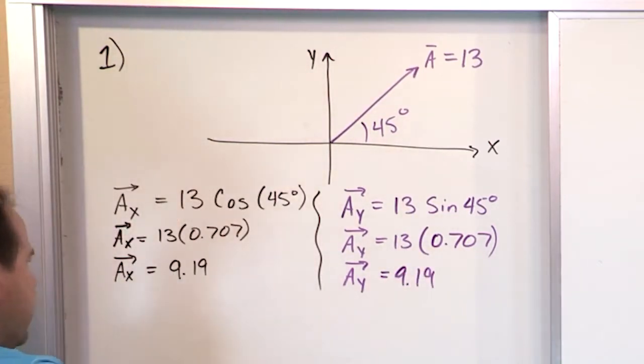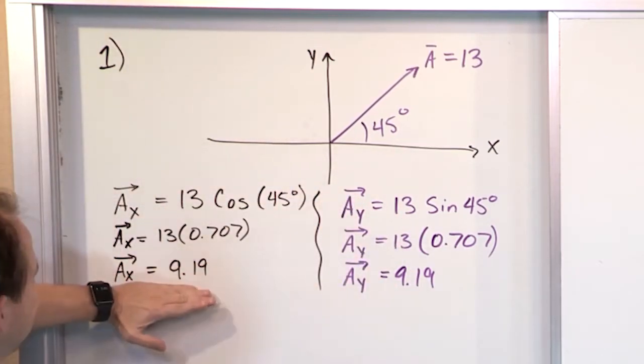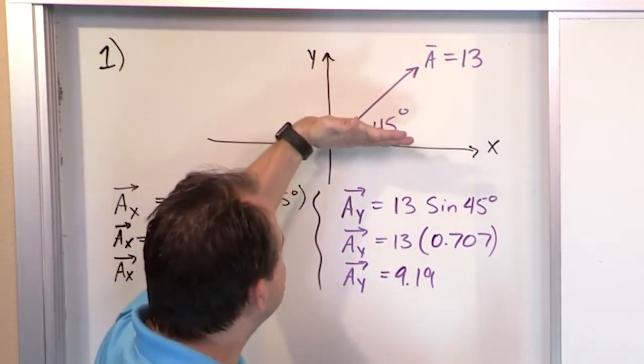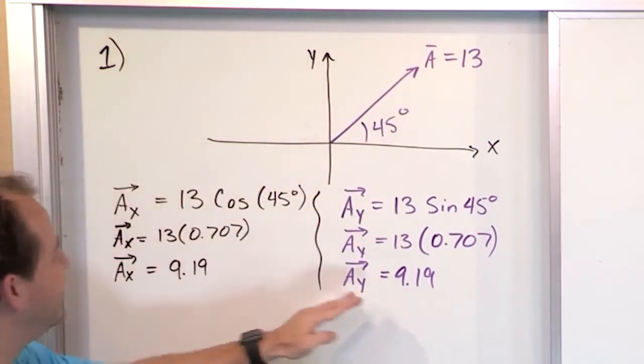So our prediction was true. When you get a calculator and multiply all these numbers together, the x component, which is the projection along the x axis, and the y component, which is the projection along the y axis, are the same. The only reason they're the same in this problem is because 45 degrees exactly splits this 90 degree.